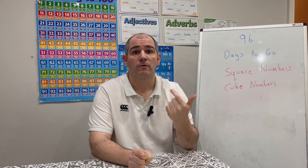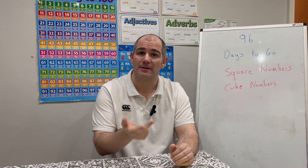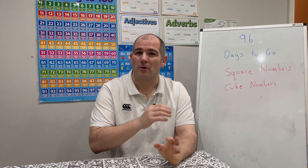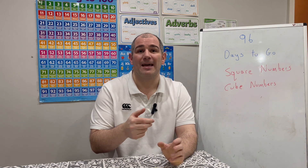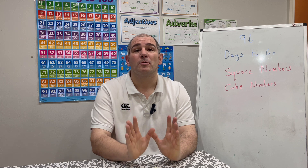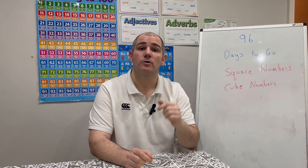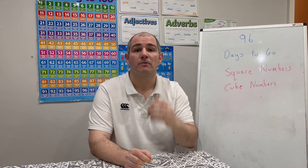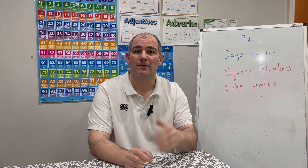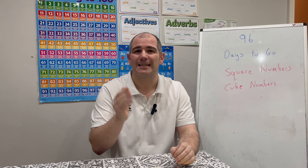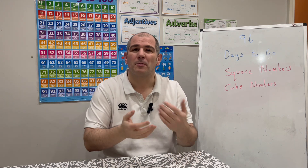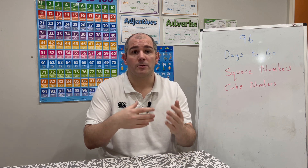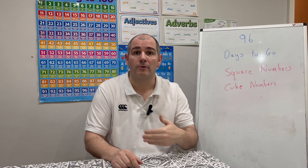To summarise: remember your square numbers — 1, 4, 9, 16, 25, 36, 49, 64, 81, 100, 121, 144, 169 and so on. I recommend knowing up to 144 off by heart. Your cube numbers: 1×1×1=1, 2×2×2=8, 3×3×3=27, 4×4×4=64, 5×5×5=125, and 10×10×10=1000. Remember how to use your calculators to square, cube, find square roots and cube roots.